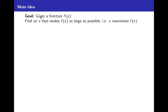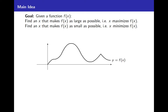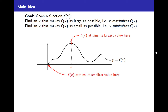The goal is this: given a function f of x, you want to find an x that makes f of x as large as possible — that is, an x that maximizes f of x. Or find an x that makes f of x as small as possible, that minimizes f of x. You can see that f of x attains its largest value right there, its highest value at c. It has some other local maximums, but that's its highest value, and at this endpoint at 0, f of x attains its smallest value.